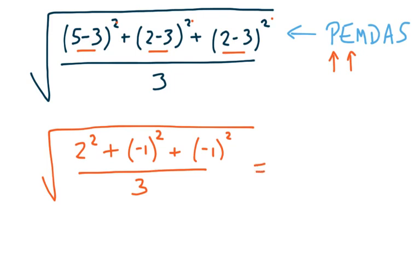We will keep our square root symbol. I've got 2 squared is 4, plus negative 1 squared is 1, plus negative 1 squared is 1, and that's all over 3.